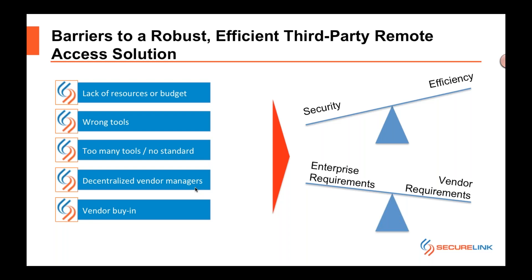There are many barriers to fixing this problem: lack of dedicated budget for third party risk management, using wrong tools like employee VPNs for vendors, managing multiple vendor platforms, decentralized vendor managers, and getting vendors to follow your security processes. This creates a tug-of-war between security and efficiency, between what the enterprise needs and what the vendor needs. Depending on the size of your organization versus the vendor, they may have more leverage than you do.